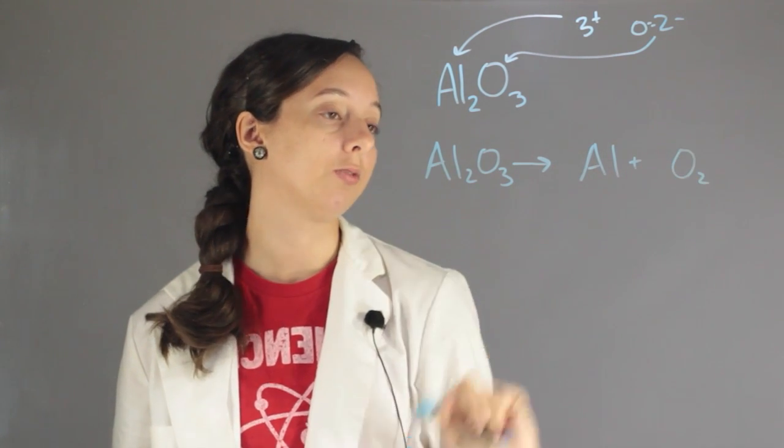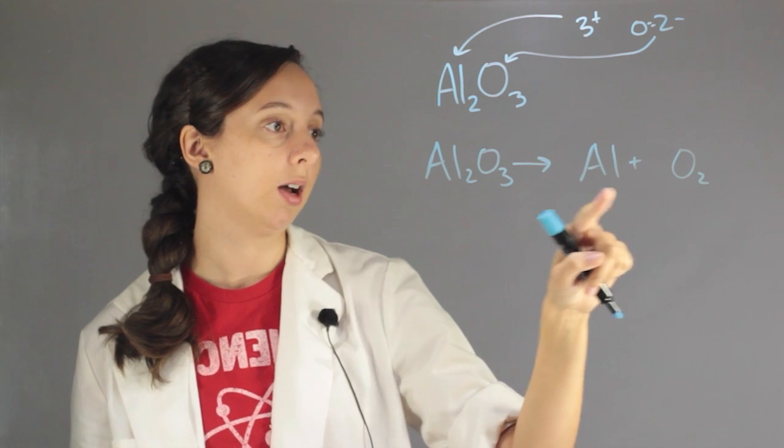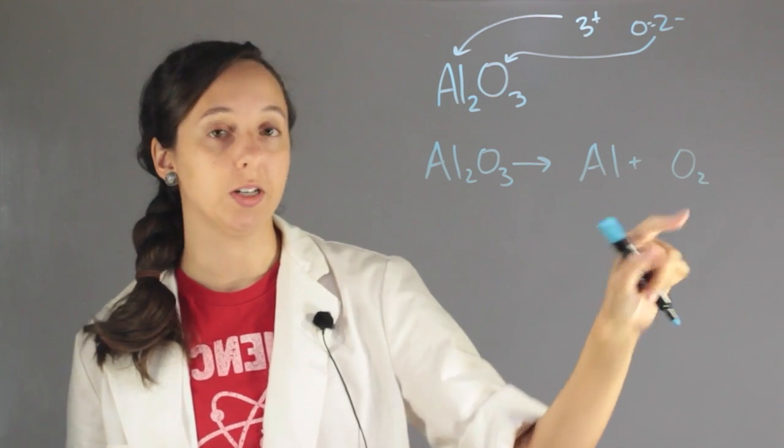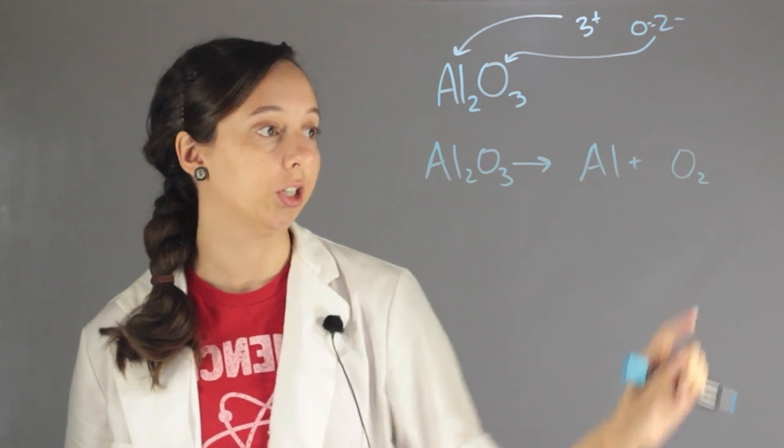So aluminum is fine to be by itself, but once you separate oxygen, when it's pure, it always prefers to be a dimer. So you have to include two oxygens here, O2.